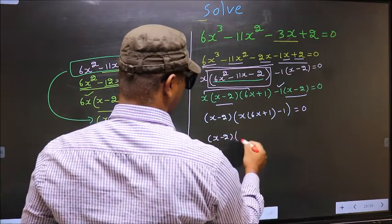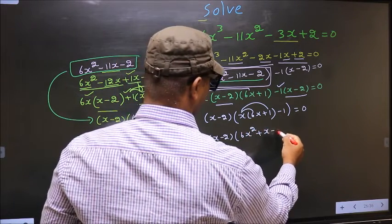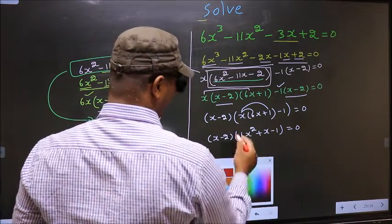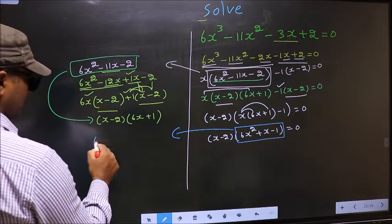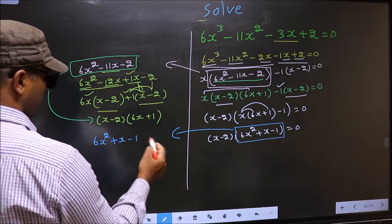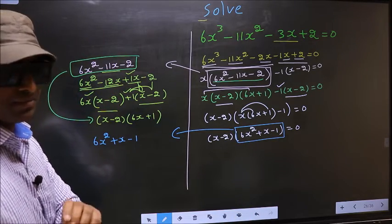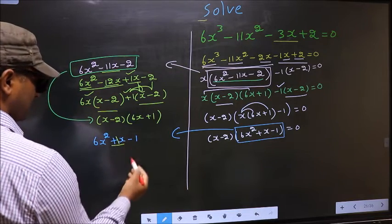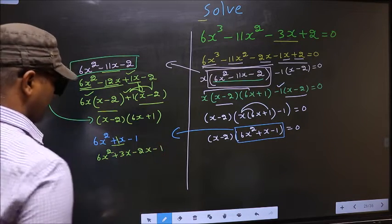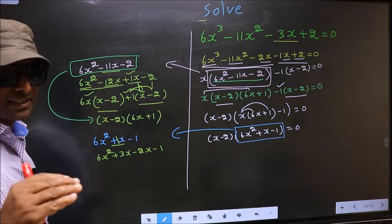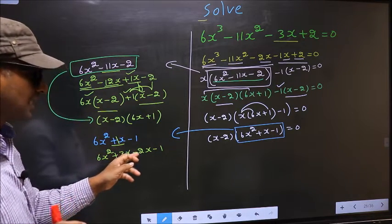Now x minus 2, and here you open up the brackets: 6x squared plus x minus 1, equal to 0. Now we have a quadratic, so I will factorize this quadratic: 6x squared plus x minus 1. To factorize this we should split the middle term, that is plus 1x. So in place of plus 1x I write plus 3x minus 2x minus 1. Directly I split plus 1x into plus 3x and minus 2x.